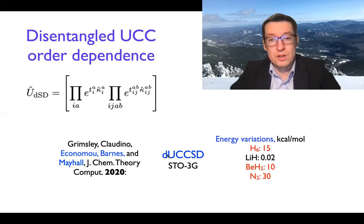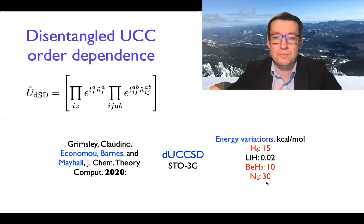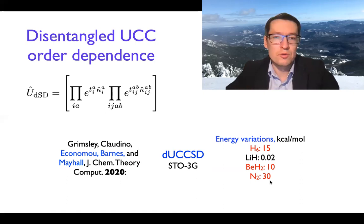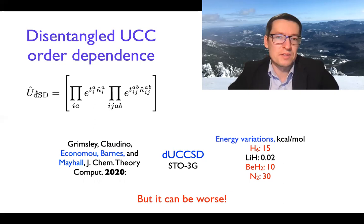The question is: how big is the difference between different operator orderings? There is work where this was studied at the singles-and-doubles level with an STO-3G basis for relatively small model systems. For nitrogen — a strongly correlated system of interest — the difference between different orderings can be quite substantial. This essentially means that if you report data using the disentangled unitary coupled cluster theory, you need to specify what order of operators you used in the product of exponents. But it turns out the numerical differences between orderings are not the worst problem with the disentangled version.